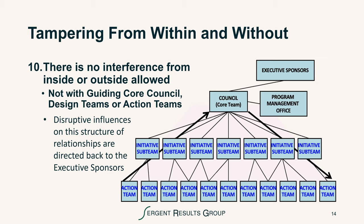Disruptive influences on the structure of relationships should always be directed back to the executive sponsors. Some manager has to approve the membership of any individual on a design team, and they need to understand who is the executive sponsor and that there will be a commitment of time for this work. They have to be involved and approve, but they are not permitted to tamper with the work of the design team. The design teams, as well as the core council, should be very focused on their work and on keeping people informed about the progress being made.